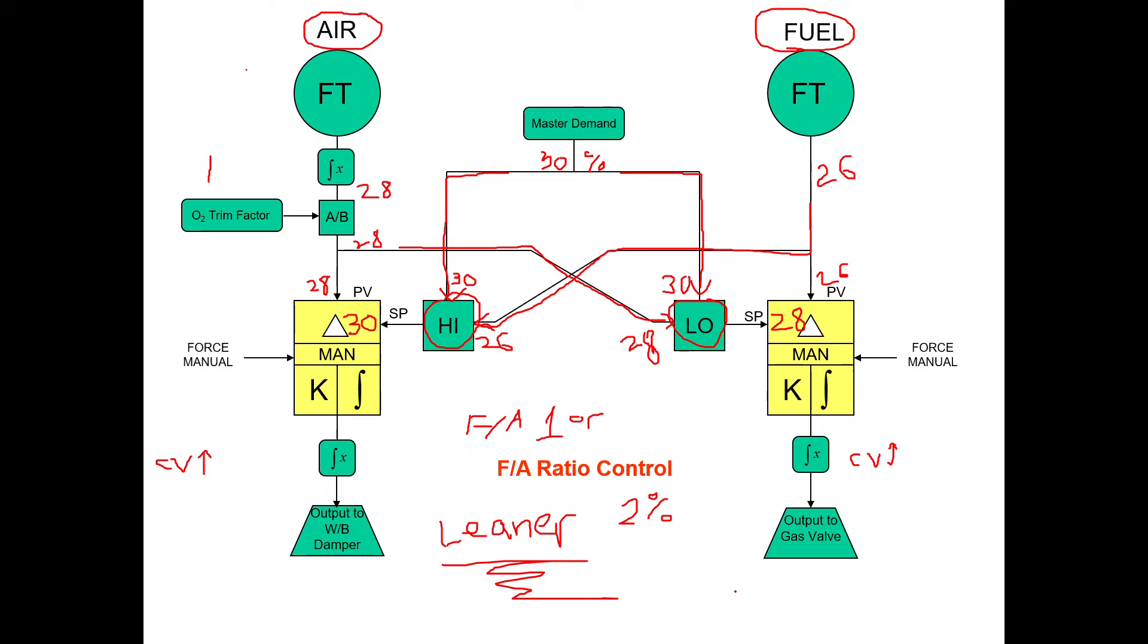So that way within that two percent they have a little bit of wiggle room to continue to increase in firing rate or decrease in firing rate. Otherwise, like I said, the controls will start to fight themselves, and what will end up happening is you'll see a very erratic fuel and air control and they won't be able to smoothly increase in firing rate or decrease in firing rate.